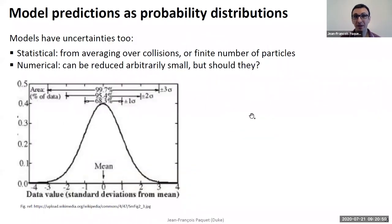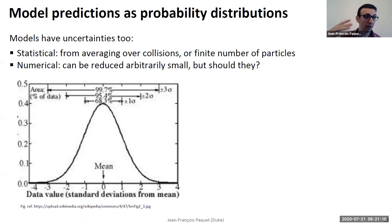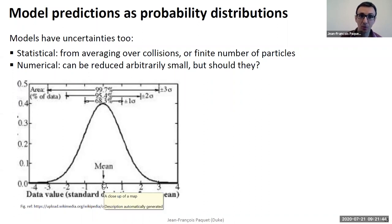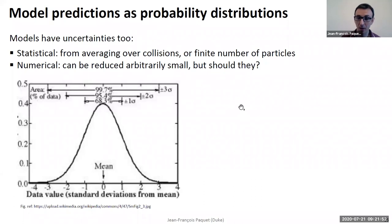You want to do the same thing for your model. Your model always has uncertainties — these can be statistical uncertainties, just like for measurements. You may be obtaining your observable by averaging over a number of different heavy-ion collisions, so you have finite statistical uncertainty. You can also have numerical uncertainties that you can often reduce with enough CPU time. The benefit of considering your model prediction as a probability distribution is that you can account for this uncertainty without driving it to zero — it will be propagated properly onto your parameters.